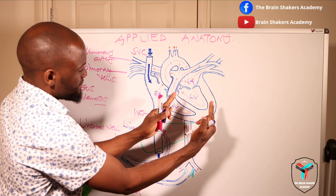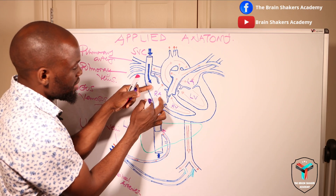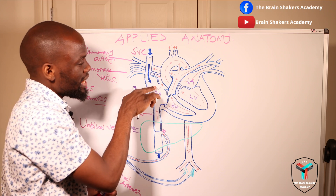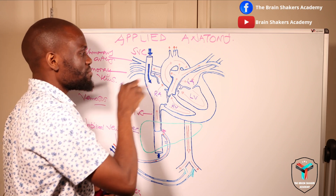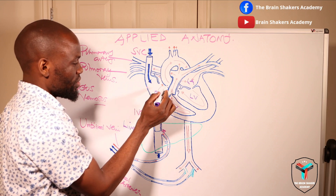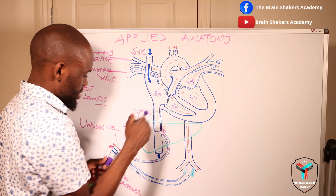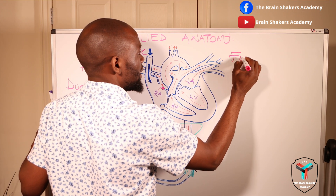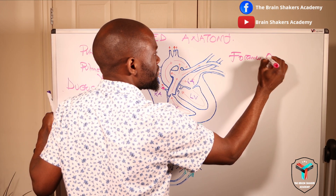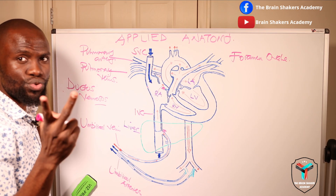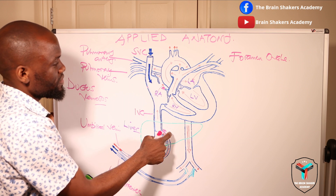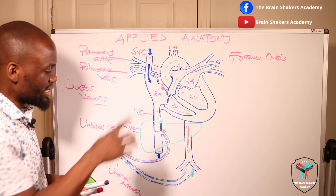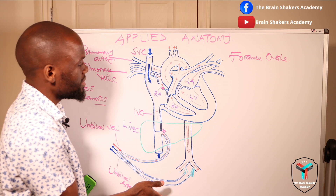Before we get into the left section of the heart, we are still in the right atrium. During fetal life there is an opening in the right atrium that allows the flow of oxygenated blood from the right atrium to the left atrium, and this is called the foramen ovale. So we have now mentioned two temporal structures: the ductus venosus and the foramen ovale, in addition to the umbilical vein and umbilical arteries.